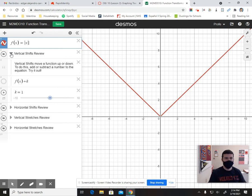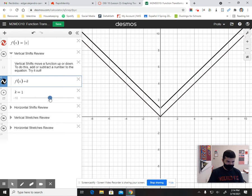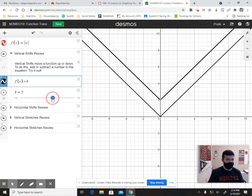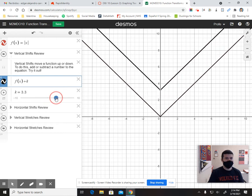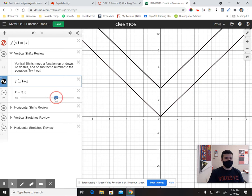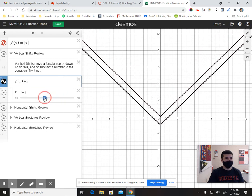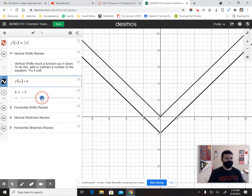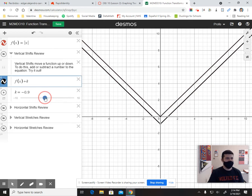Start with vertical shifts. This is review. If you want to move a function up or down, you simply add or subtract a value outside of the argument. So you're adding it to the whole function. For example, if I add 1 to this function, it's going to move up 1. If I add 2, it's going to move up 2, etc. And by the same token, if I subtract a value from the function, so if I say absolute value of x minus 2, it's going to shift down two units. So that's a rather simple one to understand.